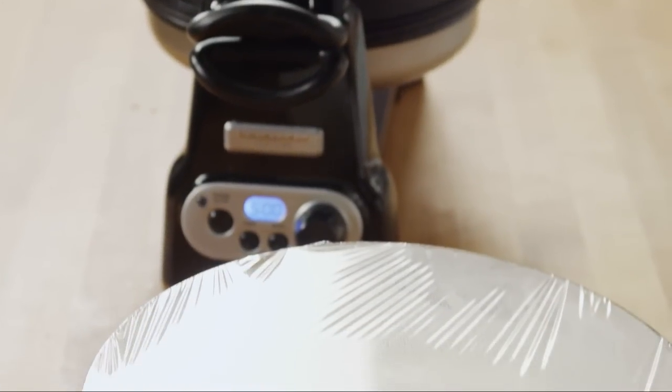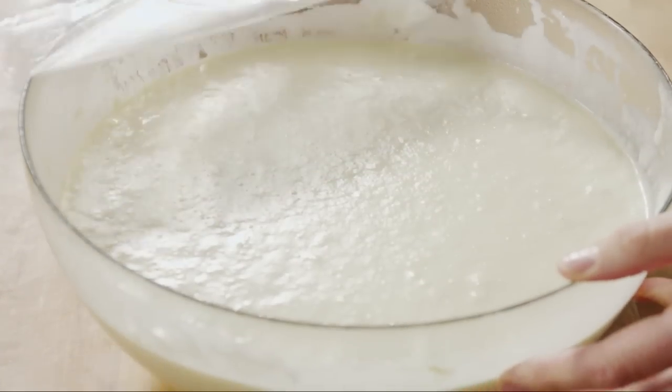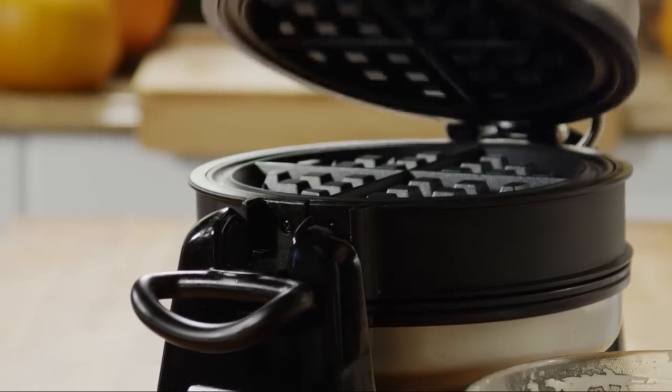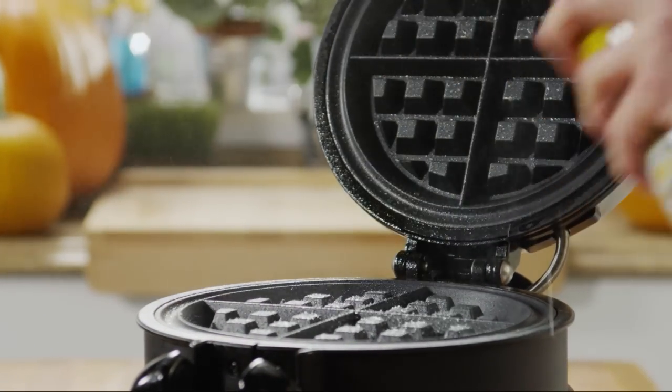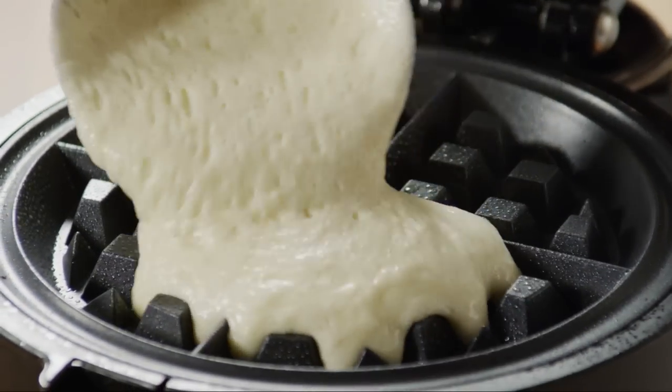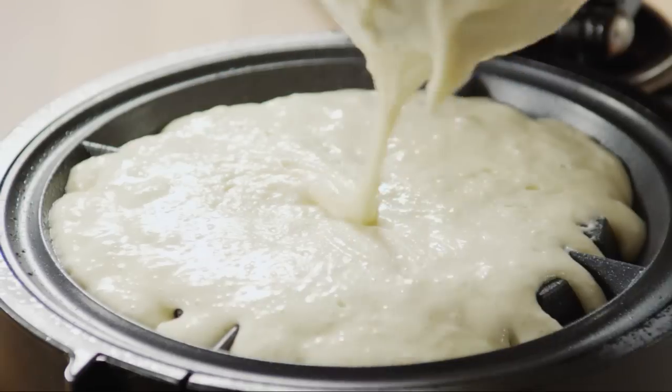When you're ready to cook the waffles, preheat your waffle iron. Brush or spray the plates with a little vegetable oil, and spoon enough batter for one waffle into the iron, following the instructions for your own waffle iron. But for many, it's about half a cup or so.